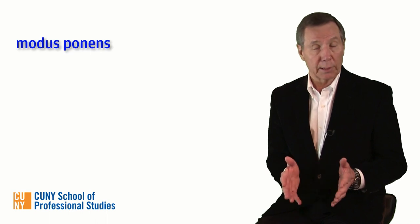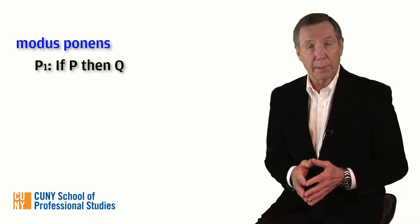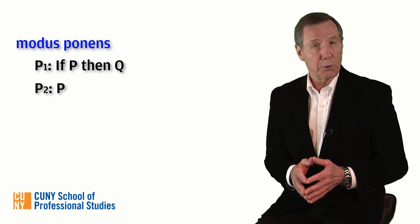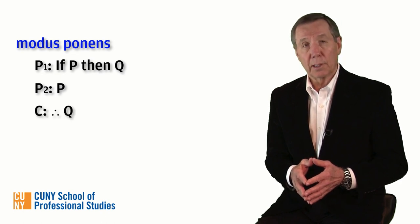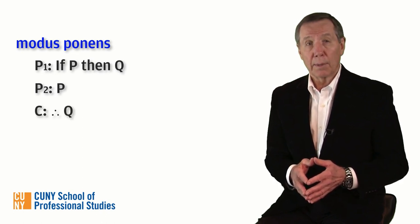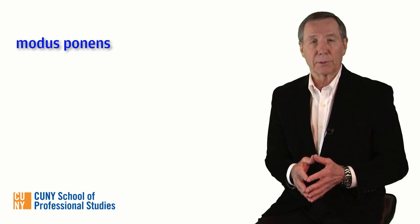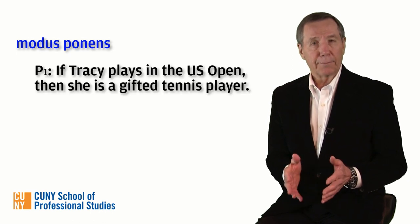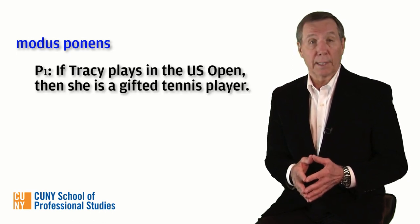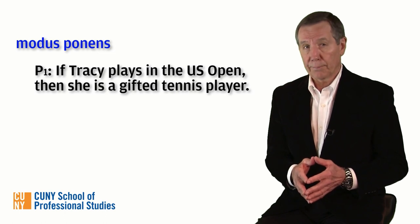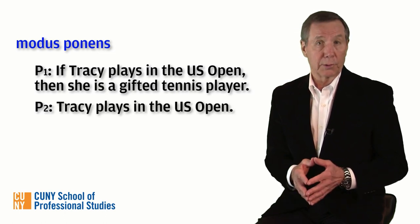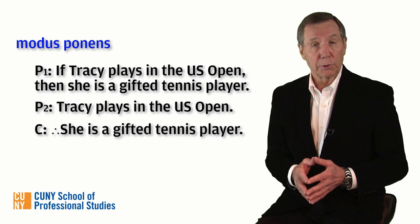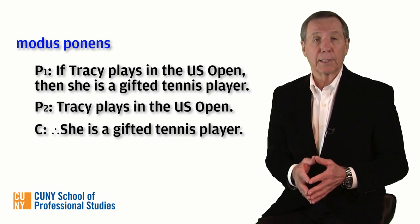Before we look at an example of a formal fallacy, let's recall the valid deductive rule of inference known as modus ponens. Here it is: Premise 1, if P then Q. Premise 2, P. Conclusion, therefore Q. Now let's fill it in with some statements. Premise 1: if Tracy plays in the U.S. Open, then she is a gifted tennis player. Premise 2: Tracy plays in the U.S. Open. Conclusion: therefore she is a gifted tennis player.